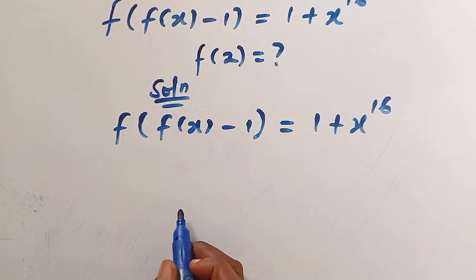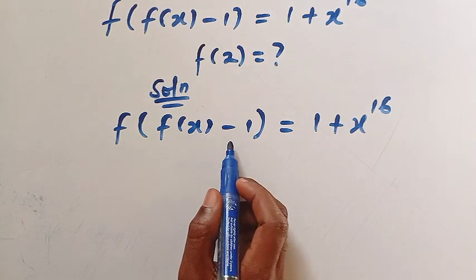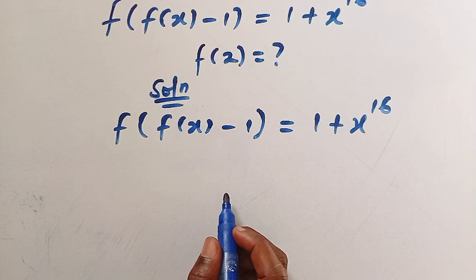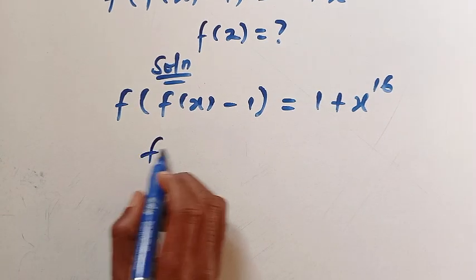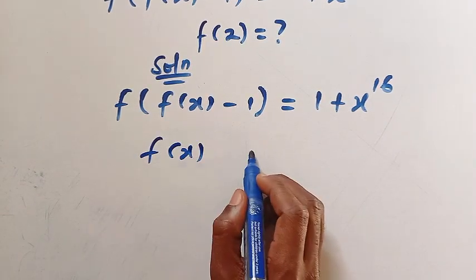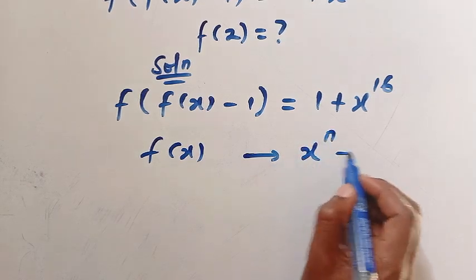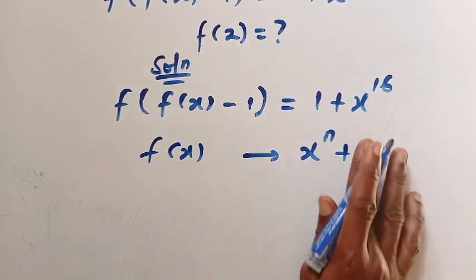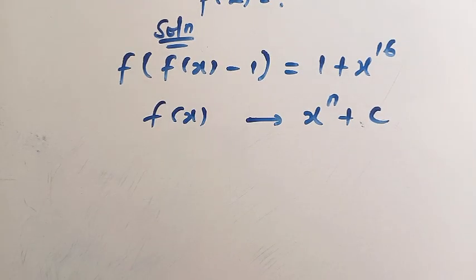So, first thing is: this f of f of x minus 1 depends on x to the power of 16. Can we say f of x is in the form of x to the power of n plus c, where n is the exponent from x and c is a constant? Let's try it and see if it works.